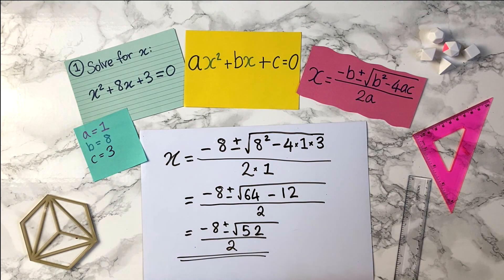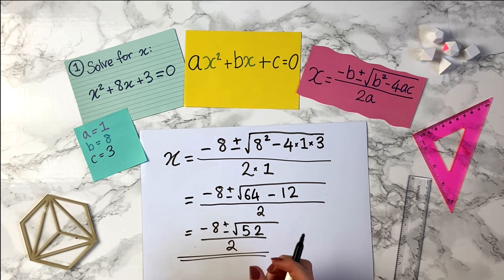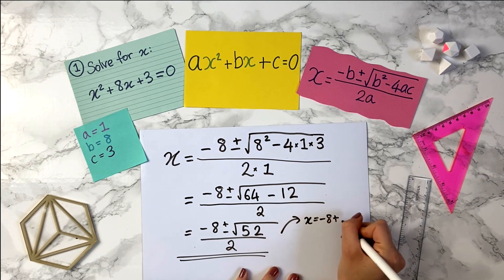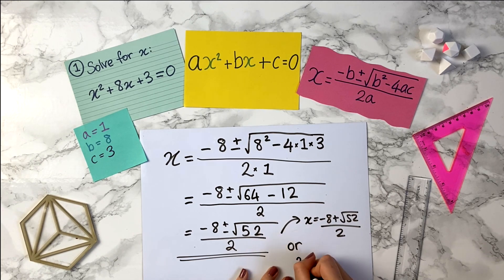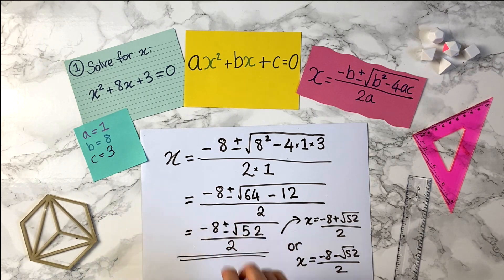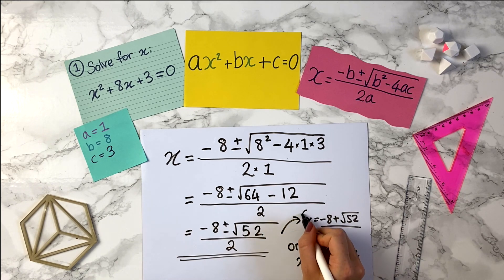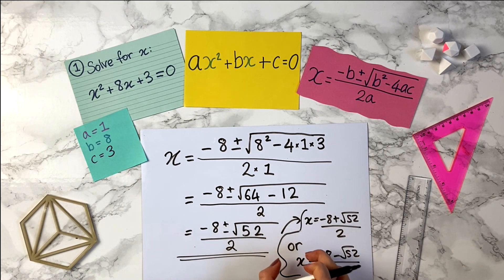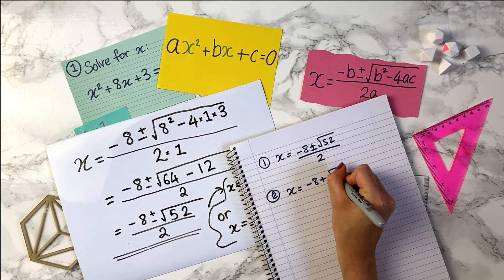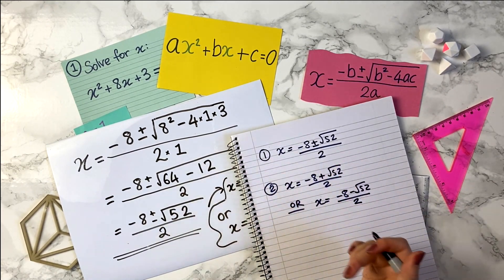This is correct as an answer. If it asks for a precise answer, this is something you can write down. Remember this plus or minus is saying that there are actually two solutions. So one solution is x equals minus 8 plus the square root of 52 over 2, and the other solution is x equals minus 8 minus the square root of 52 all over 2. When you write down your answer in exact form, you can write it with a plus or minus, or write both solutions out separately. It's really crucial that you make it clear there are two solutions.